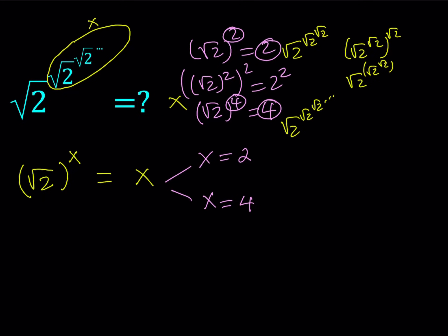This is a similar situation to the infinite fraction problem — 3 minus 2 over 3 minus 2 over dot dot dot — where there was confusion about how to define the sequence and whether the answer is 1 or 2. For this problem we'll take a closer look. We can list some terms to get an idea. For example, square root of 2 to the power square root of 2 is going to be greater than square root of 2, since square root of 2 to the power x is an increasing function.